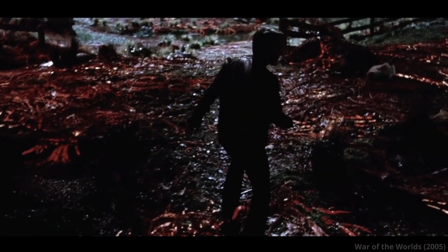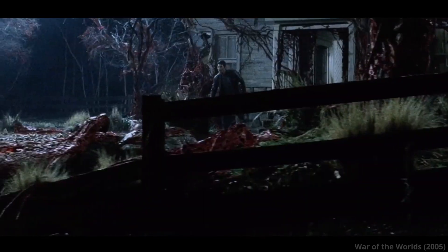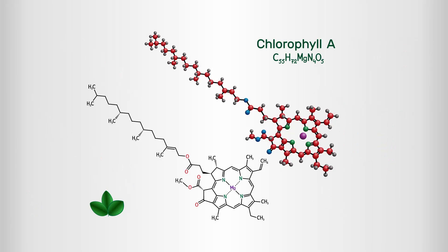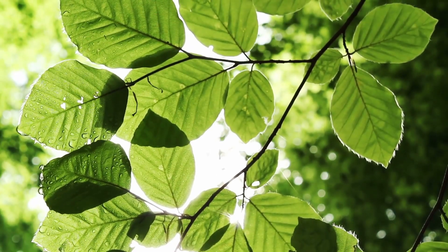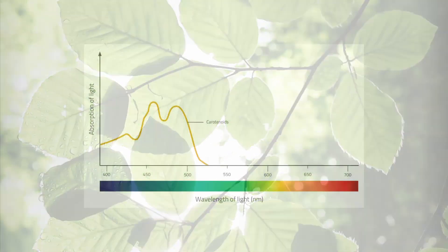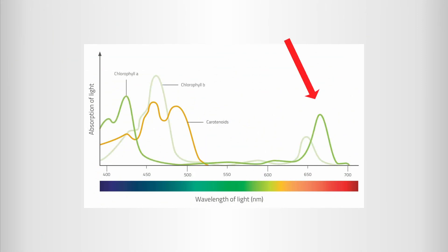But carotenoids aren't the most efficient way of converting light into chemical energy. For that, it's actually chlorophyll, the pigment which gives plants their green color—a pigment that absorbs both red and blue light.